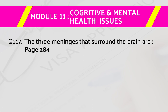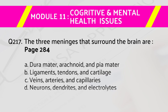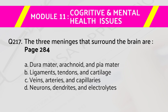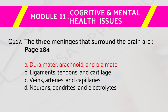Question number 217: The three menings that surround the brain are — page number 284. Answers are: a) dura mater, arachnoid, and pia mater, b) ligaments, tendons, and cartilage, c) veins, arteries, and capillaries, d) neurons, dendrites, and electrolytes. The right answer is a) dura mater, arachnoid, and pia mater.